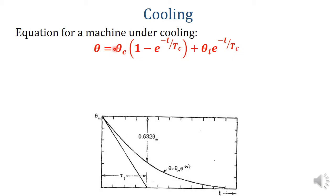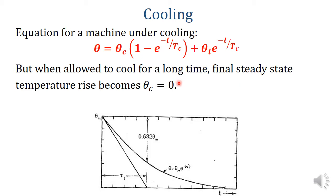Theta_c is the final steady state temperature rise after cooling, and theta_i is the initial temperature rise of the machine. When the machine is allowed to cool for a long time, its temperature reaches ambient temperature, so there is no difference between ambient and machine temperature. Thus theta_c becomes 0, and the cooling equation simplifies to theta equals theta_i times e raised to minus t by tc. This is the general cooling equation when the machine cools down to ambient temperature.